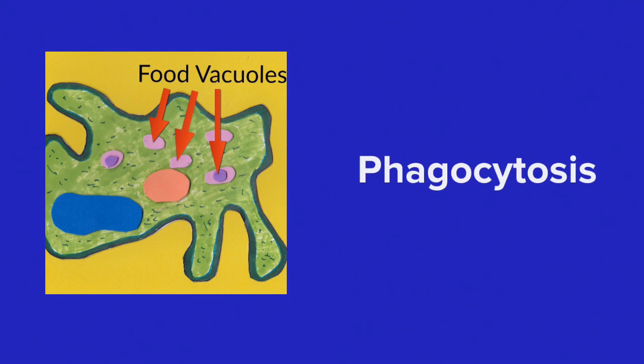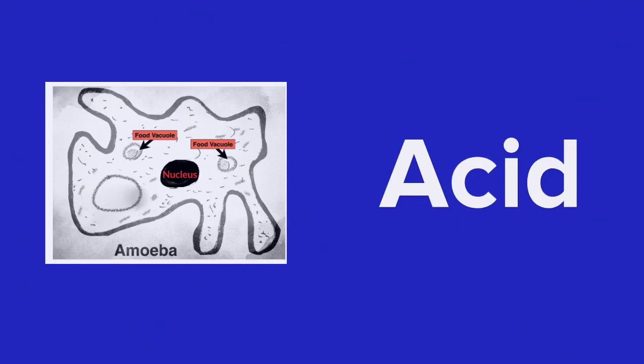Amoeba are heterotrophic, so they cannot make their own food and they would feed off other protists, plants, and bacteria, for example. They take in their food by means of phagocytosis. So the pseudopodia surround and engulf the food source and it gets trapped in a bubble of water, which is now a food vacuole. Into this food vacuole is secreted acid to kill the prey and then also digestive enzymes to break down the food.